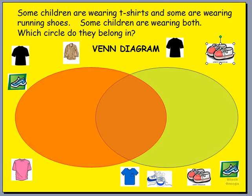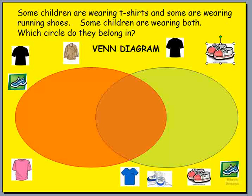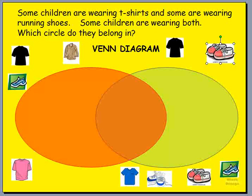If you look at the circles here in front of us, we're going to put the children with t-shirts in the left circle, and the children wearing the running shoes on the right. But where are we going to put the children that are wearing t-shirt and running shoes? They're wearing both things — they have the two attributes that we're looking at.